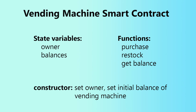State variables persist between multiple invocations of the smart contract and are stored on the blockchain. We'll need an owner variable to hold the address of the owner of the vending machine — who collects funds and restocks it — and something to hold the balances, not only of the vending machine but of everyone who's interacted with it. The constructor gets called once when we deploy the smart contract. We'll need to set the owner and the initial balance.